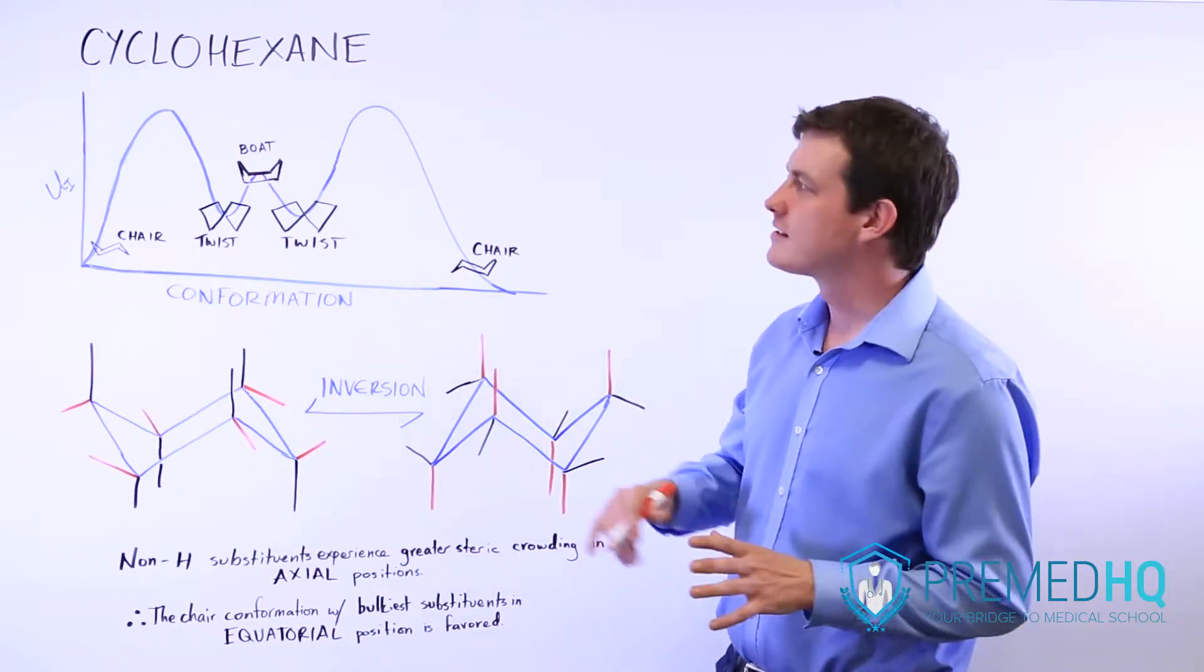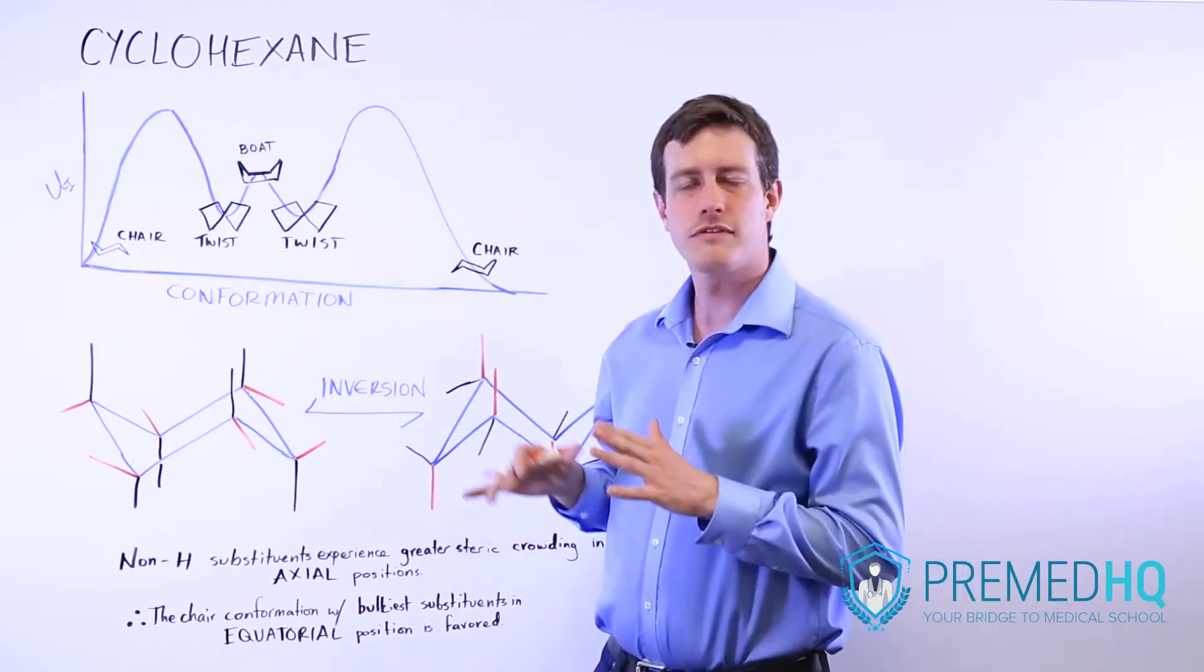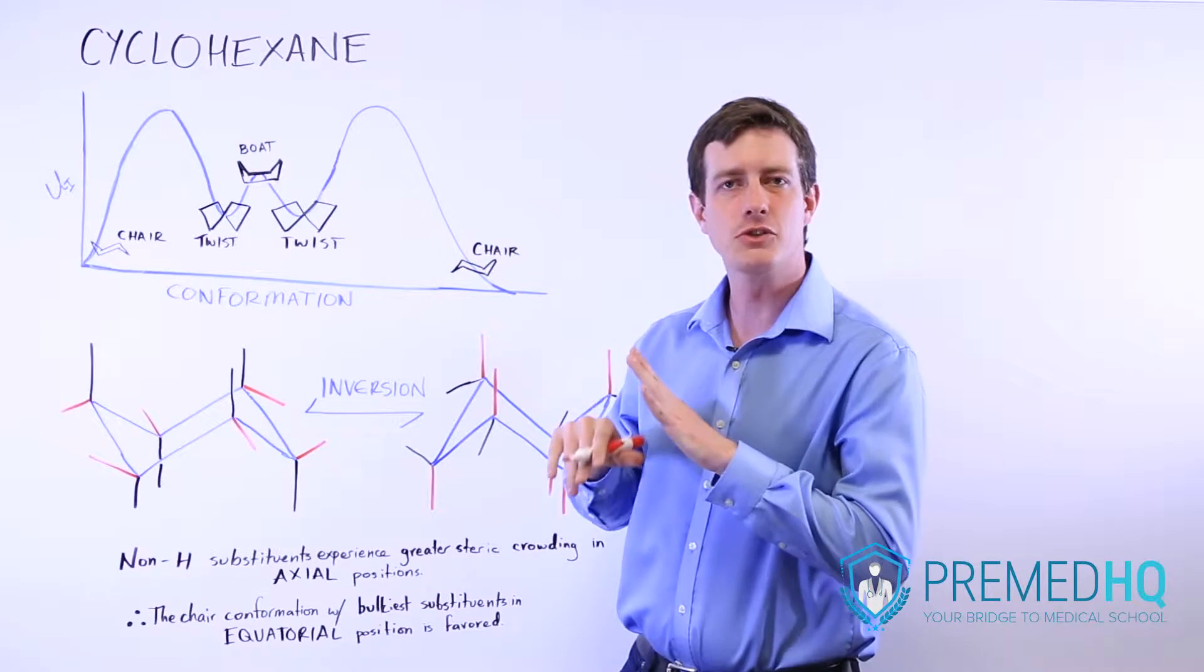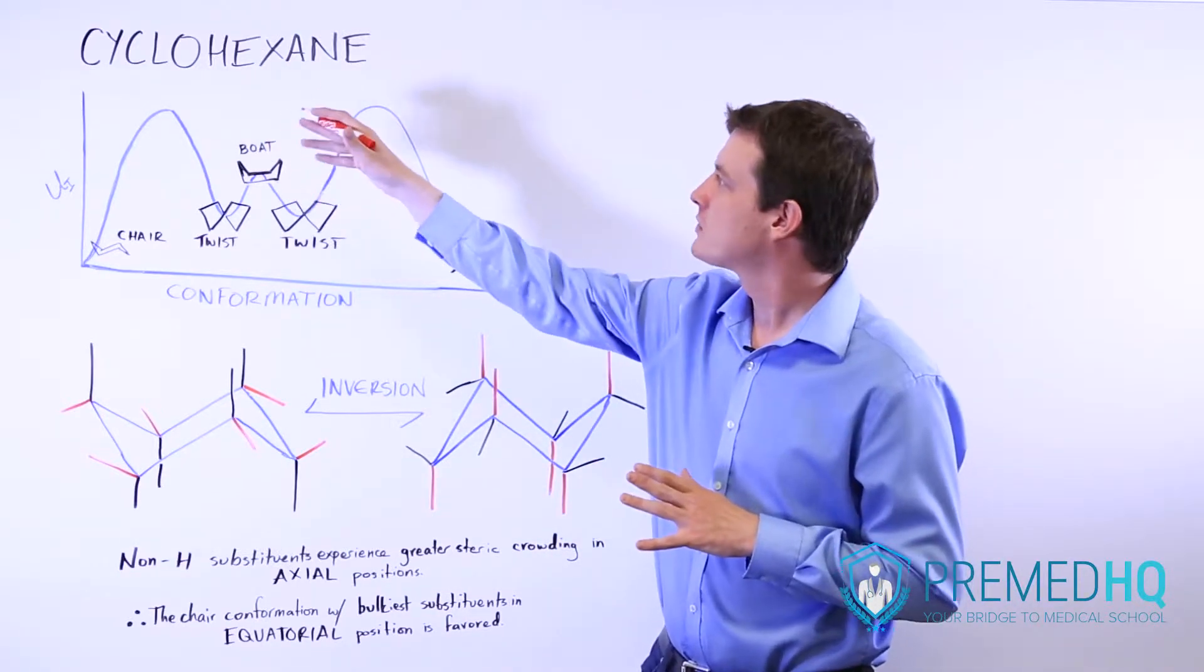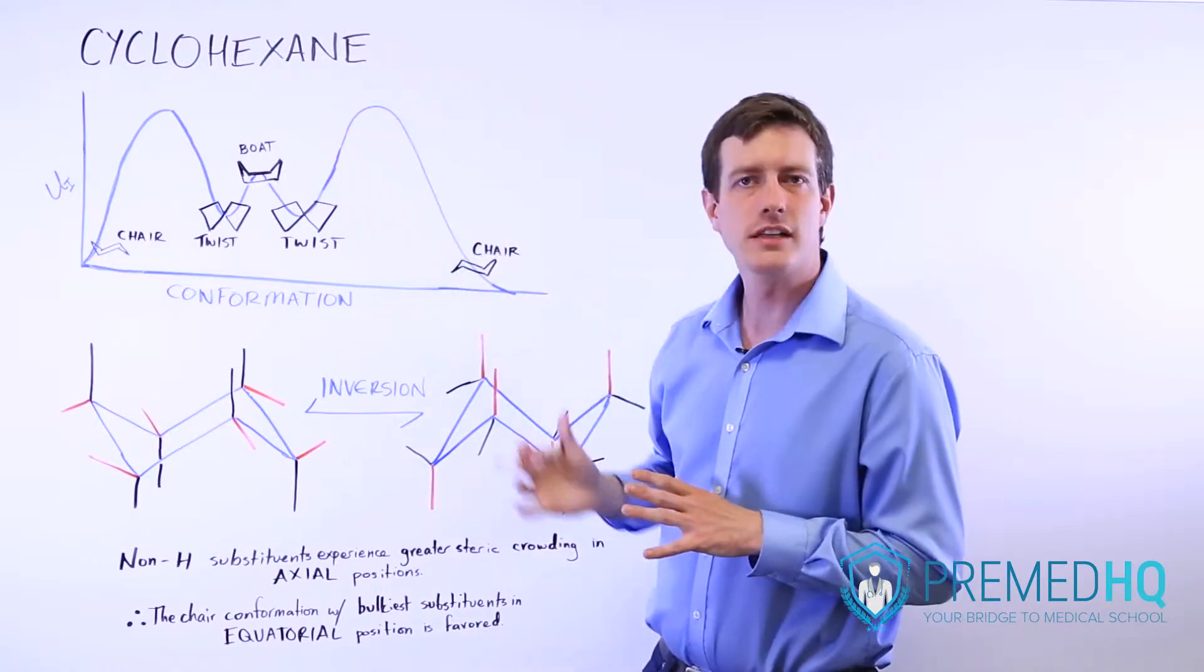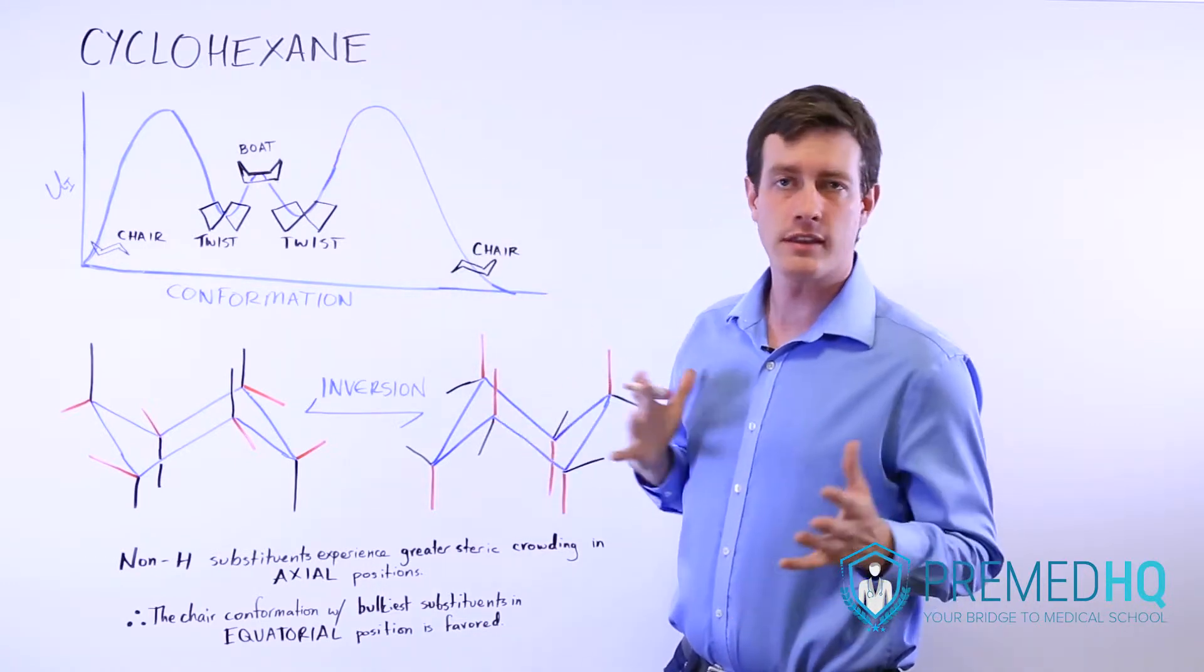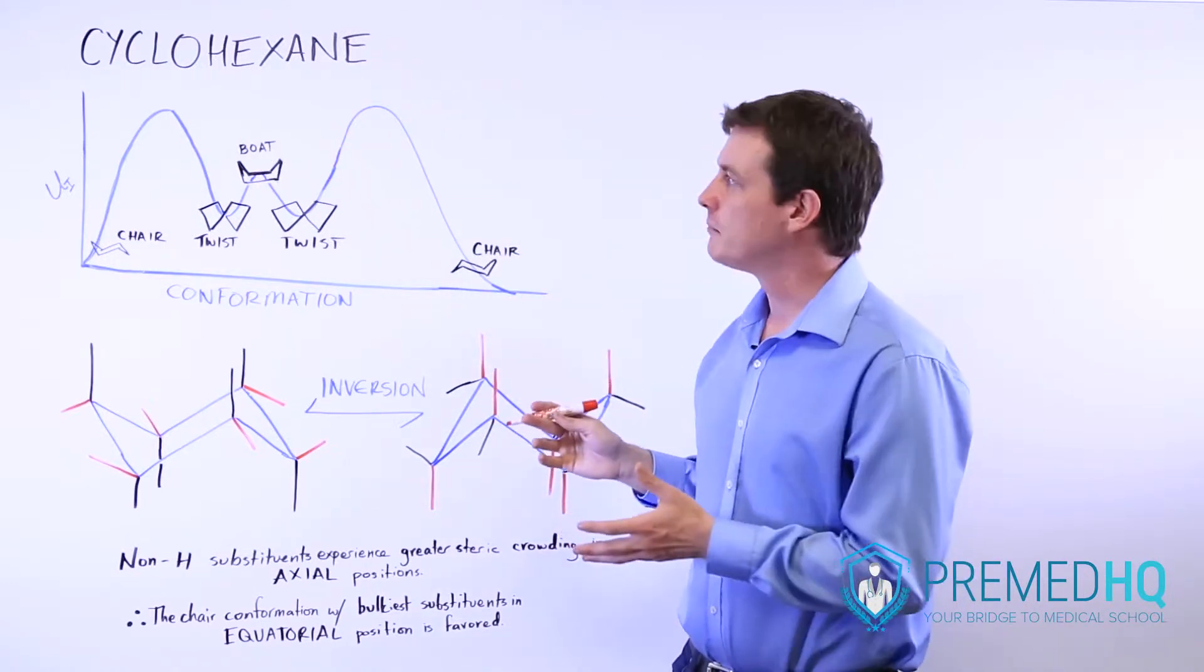Because cyclohexane has the lowest ring strain with tetrahedral bond angles, cyclohexane is probably the most commonly encountered cycloalkane that you'll deal with in organic chemistry and on the MCAT.